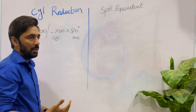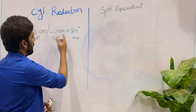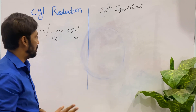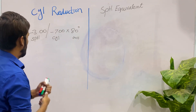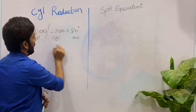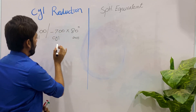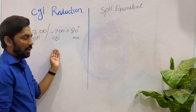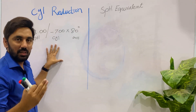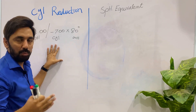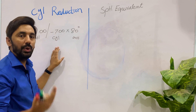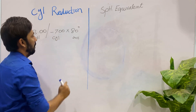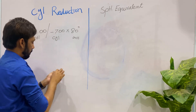Can I just reduce the cylinder to minus six, minus five, or minus four on my personal will? No — there is a procedure called cylindrical reduction. In cylindrical reduction, it is your choice as a clinician, as an optometrist, how much cylinder you want to reduce from the prescription. For example, you want to reduce minus two from the minus seven.